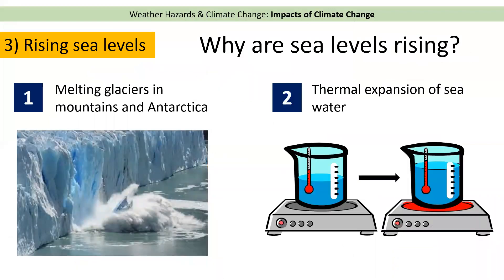The last impact we're going to look at is rising sea levels. Sea levels are rising for two different reasons. The first reason, as we've just discussed, is because glaciers are melting — first in the mountains, but also in places like Antarctica and Greenland. A big chunk of glacier can melt and fall into the sea, adding more water and causing sea levels to rise.